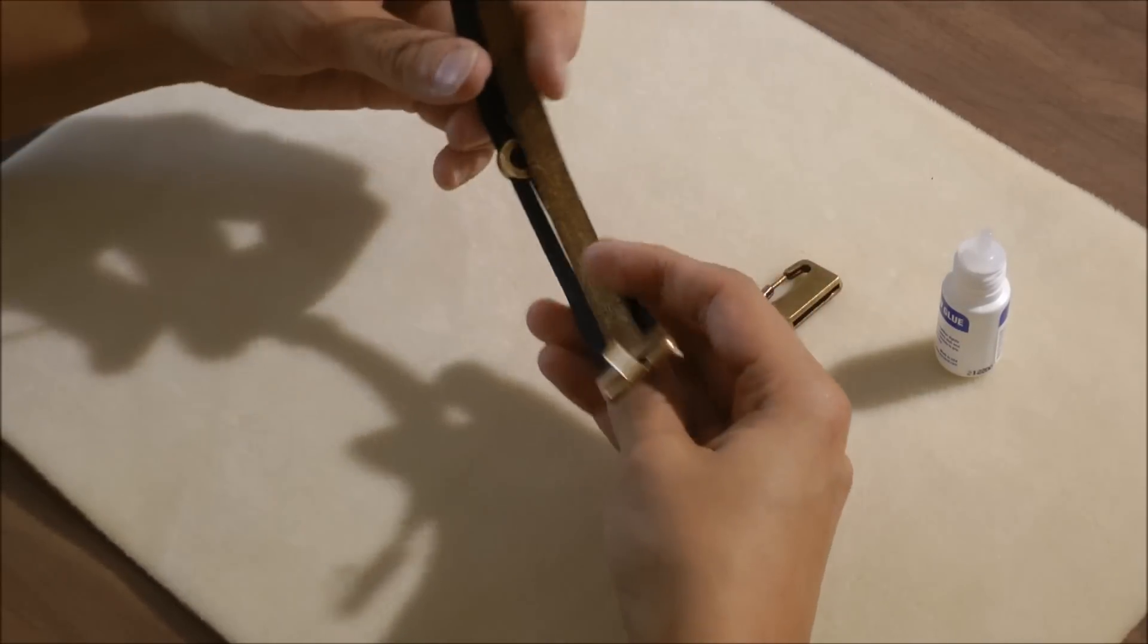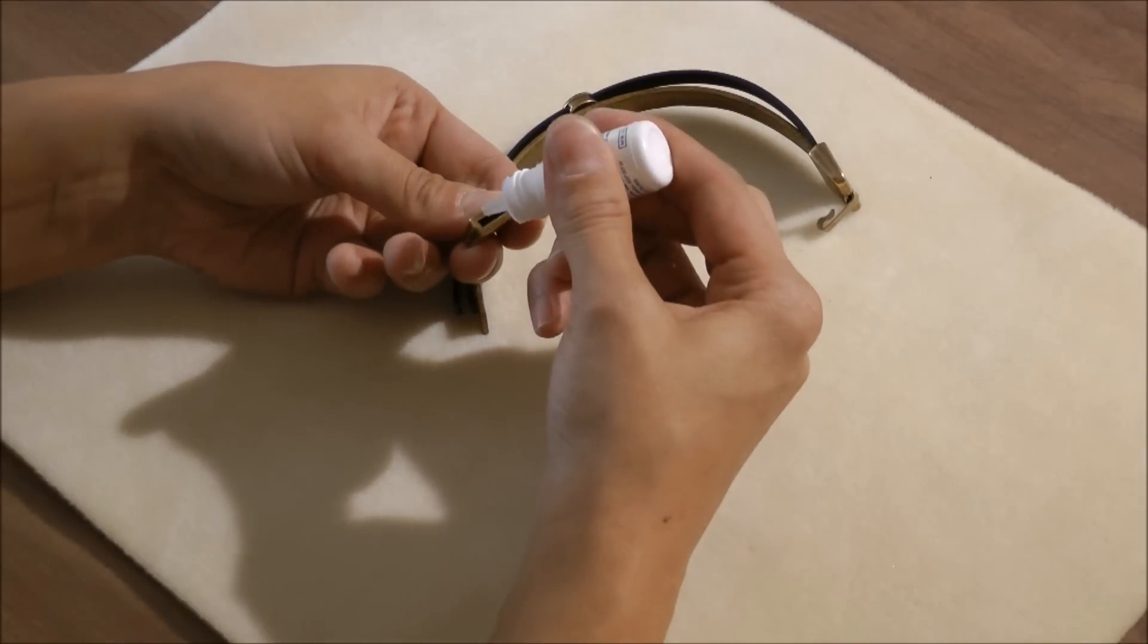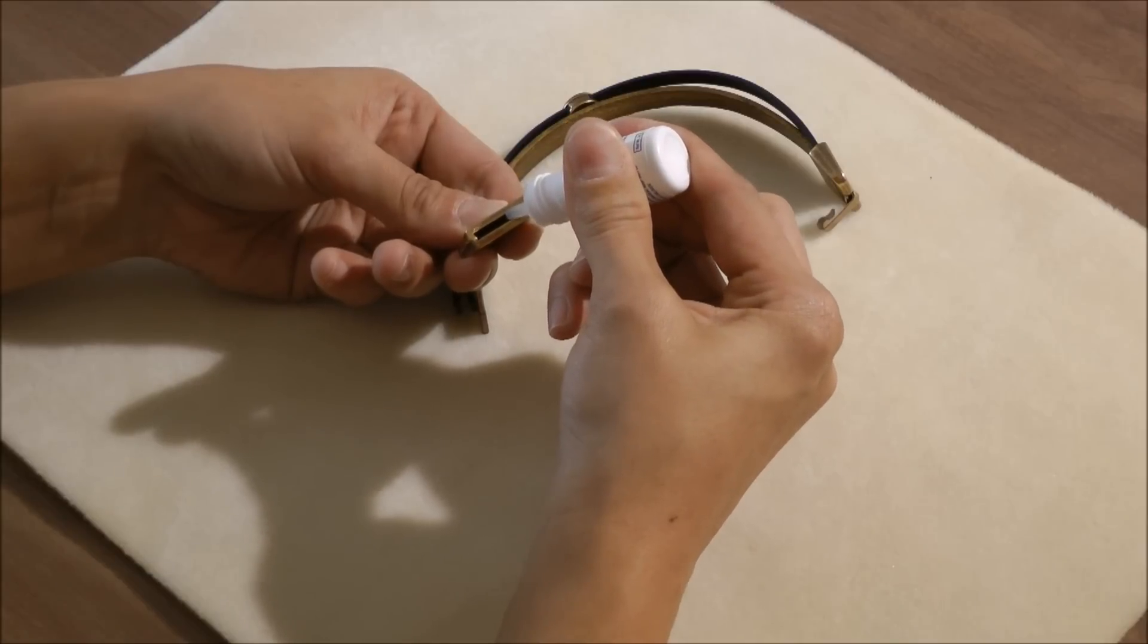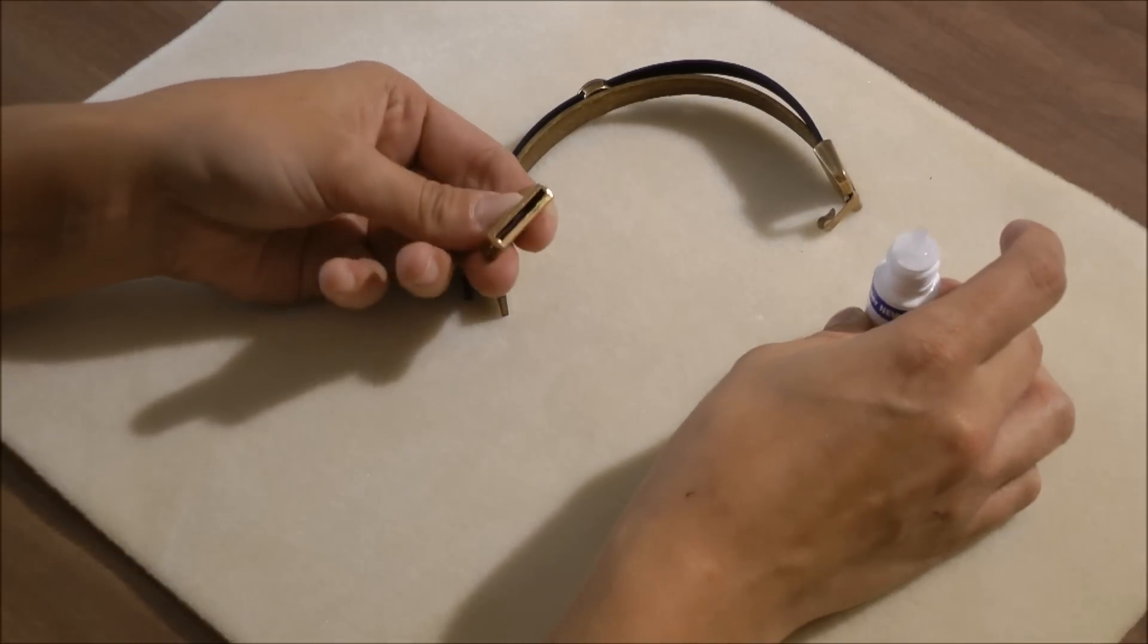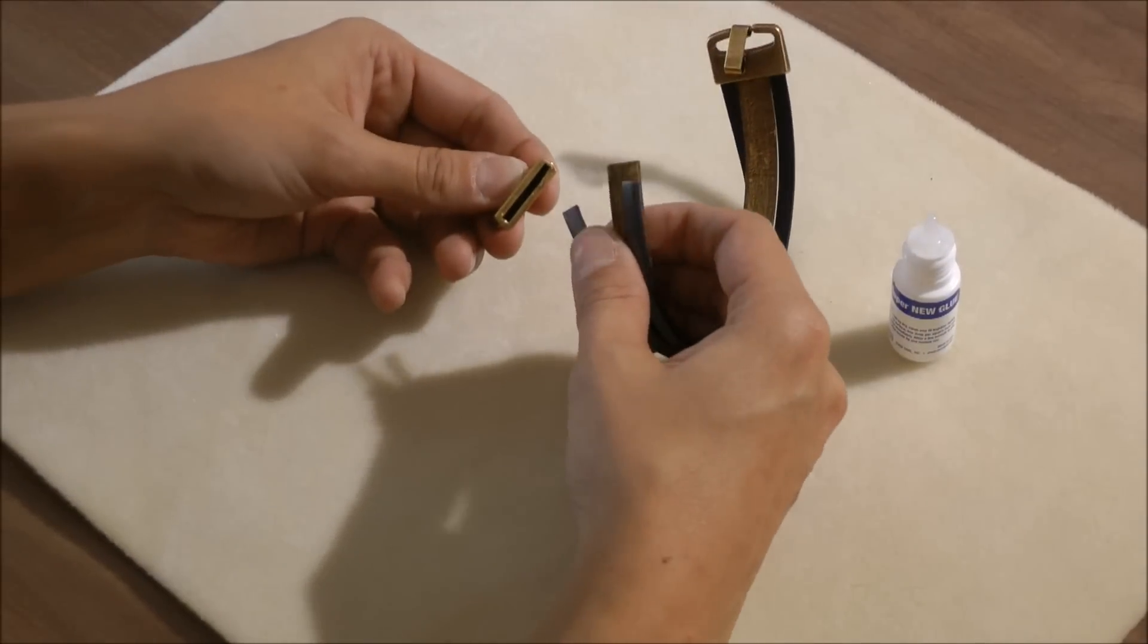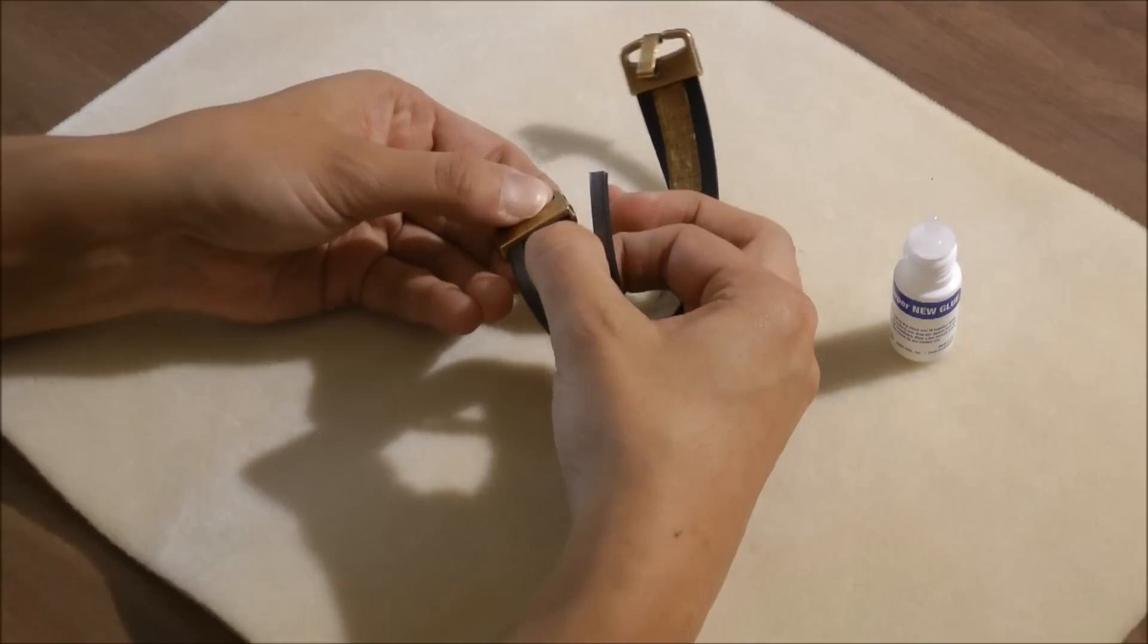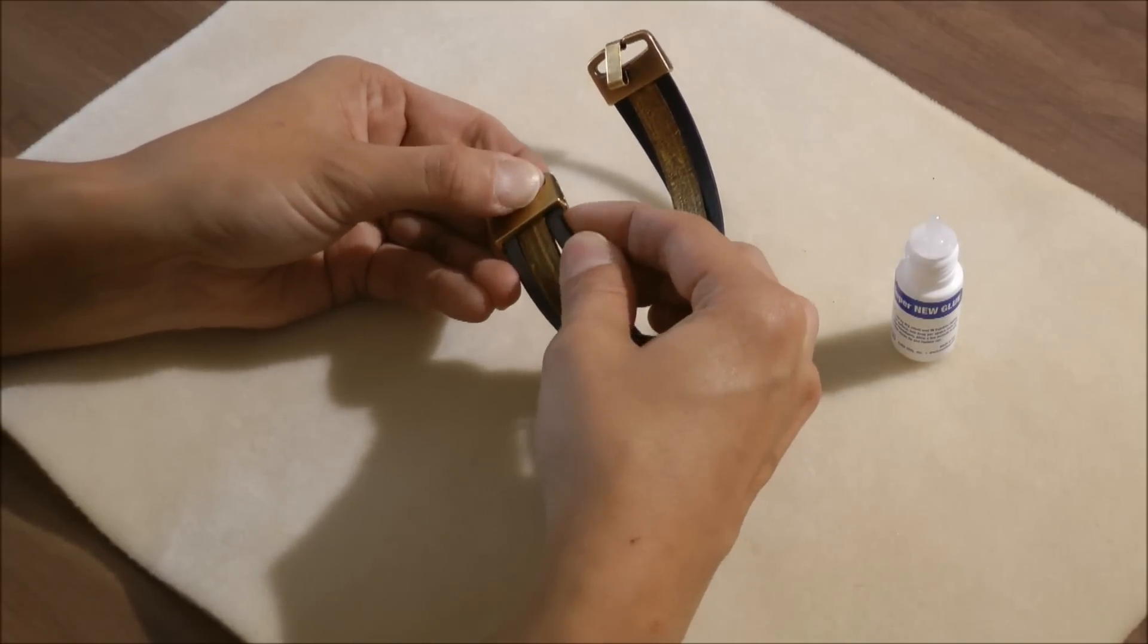Now I can repeat on the other side. So I take this piece of the clasp and again let the glue drip down into the bottom there. And then I can put the leathers in again. Start with the gray, add the gold, and add the other gray piece.